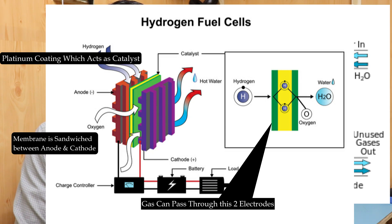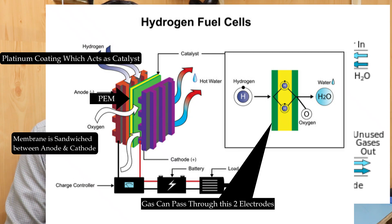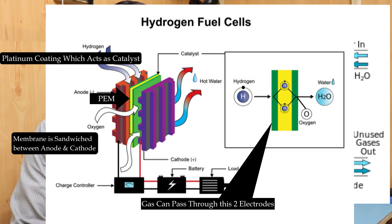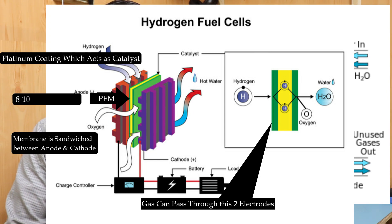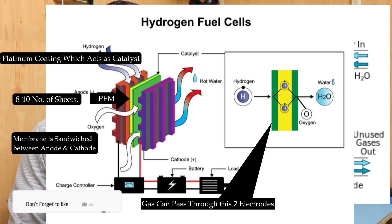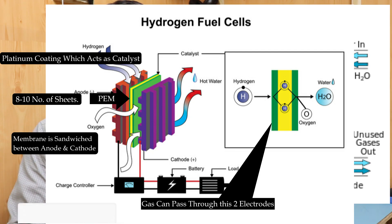The PEM — the polymeric membrane — is very thin, just like a piece of paper. It is made of certain organic materials and its thickness is measured in microns. The number of sheets can vary up to 8 to 10 layers, similar to a piece of paper.